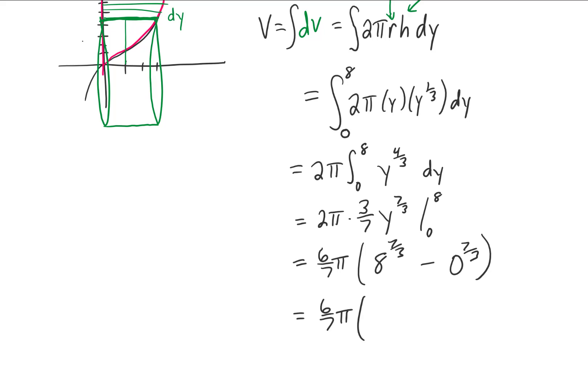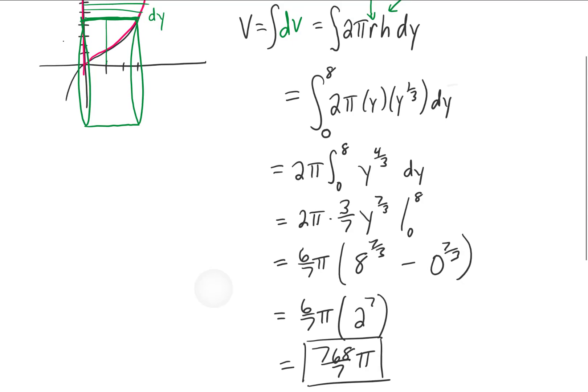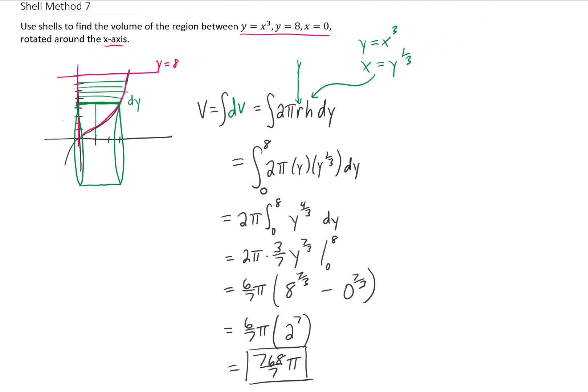We can take a cube root of eight to get two, and that would give us two to the seventh. Multiplying two to the seventh times 6/7 gives us 768/7 π, and again, that's our final answer in units cubed, and we are finished with this problem. I'll see you in the next one.